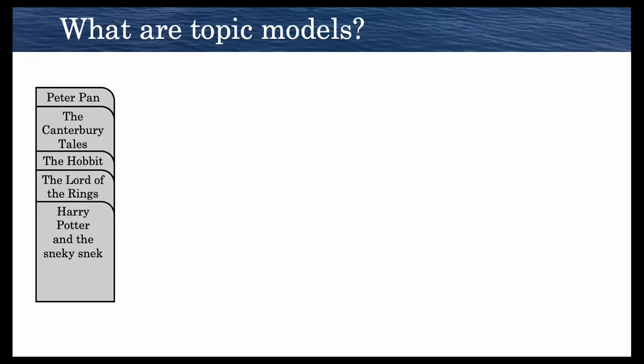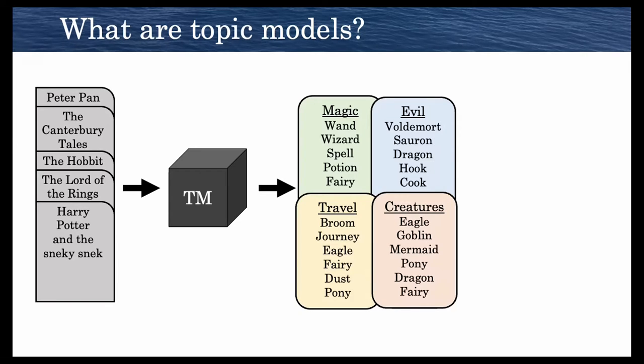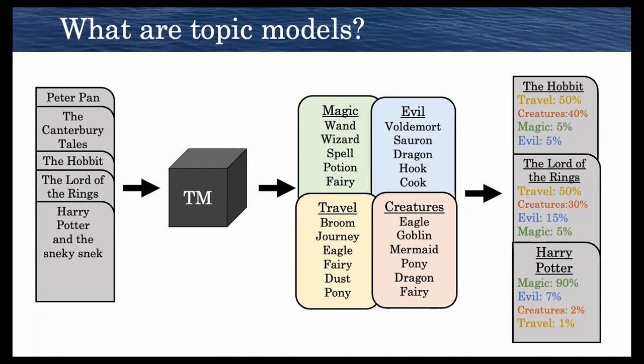Topic models take a set of documents like you see here on the left, read through them, and return a set of topics that those documents might be about. Topics are a set of related words, like magic that contains wand, wizard, and spell. These topics can be interpreted directly by people or used to classify documents, dividing documents into their component topics like you see here on the right.